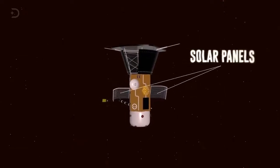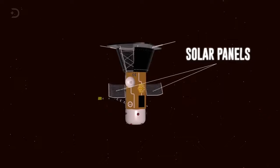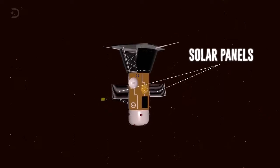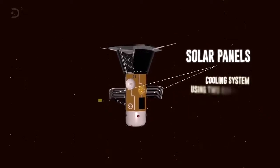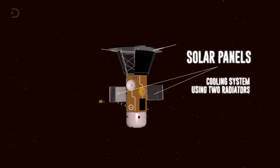Solar panels can open and close depending on how close to the sun the probe is. The solar arrays are protected by a simple cooling system, using two radiators that keep the coolant from freezing.